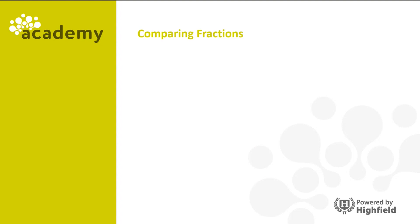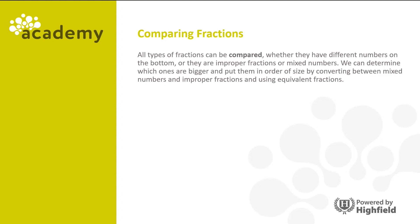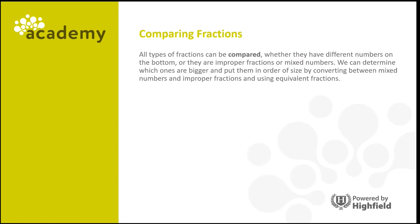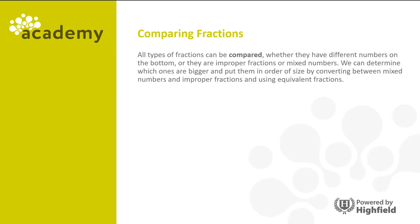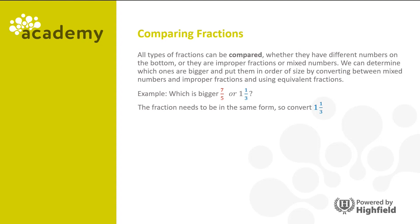Now let's look at comparing fractions. All types of fractions can be compared — whether they have different denominators, are improper fractions, or mixed numbers — by converting between forms and using equivalent fractions. In this example, which is bigger: seven fifths or one and a third? We have an improper fraction and a mixed number, so we convert one and one third into an improper fraction, since improper fractions are easier to compare. One times three plus one gives us four thirds.